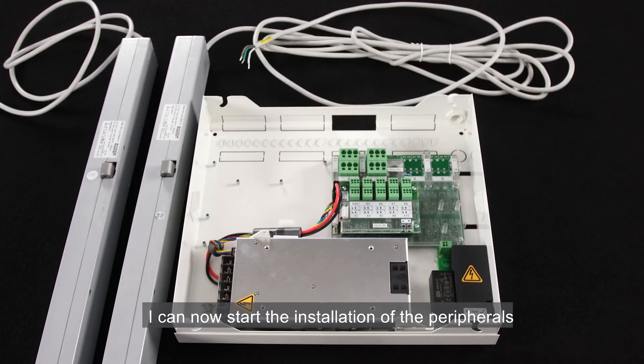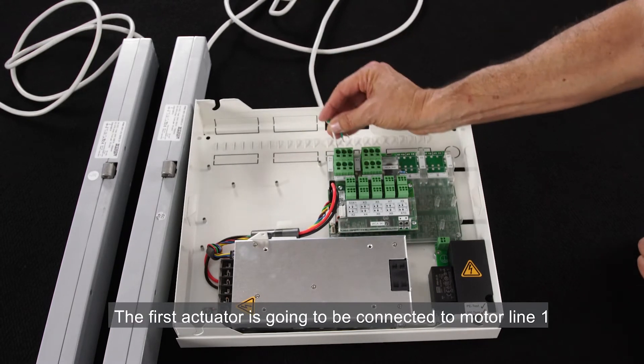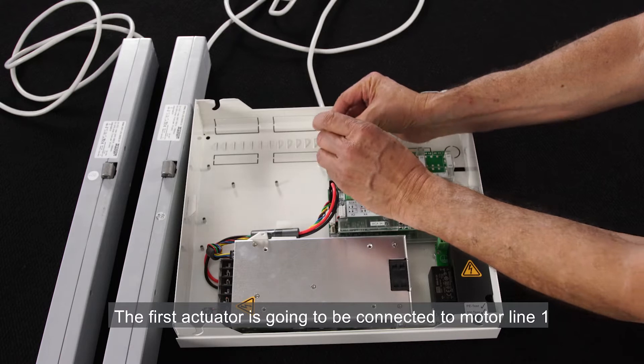I can now start the installation of the peripherals. First, I'll connect the two actuators. The first actuator is going to be connected to motor line 1.